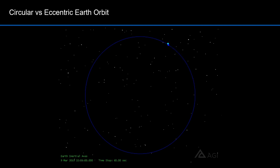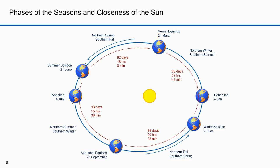The geometric constructions just shown were hypothetical. Here's a simulation with Satellite Toolkit that depicts a circular Earth orbit and one with a 0.017 eccentricity, which is the true eccentricity of Earth's orbit. There's not a lot of difference in these orbits. Earth's orbit is eccentric enough, however, to cause a four-day difference between fall and winter and a four-day difference between spring and summer.